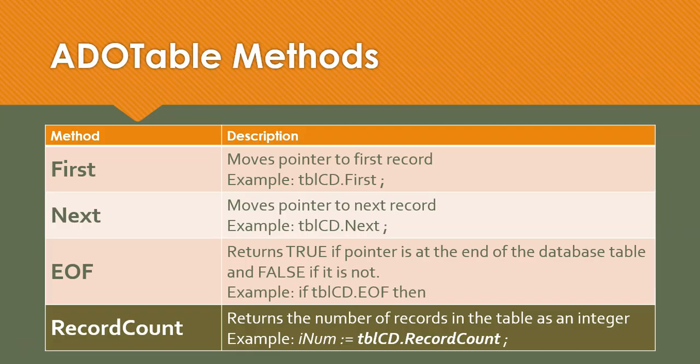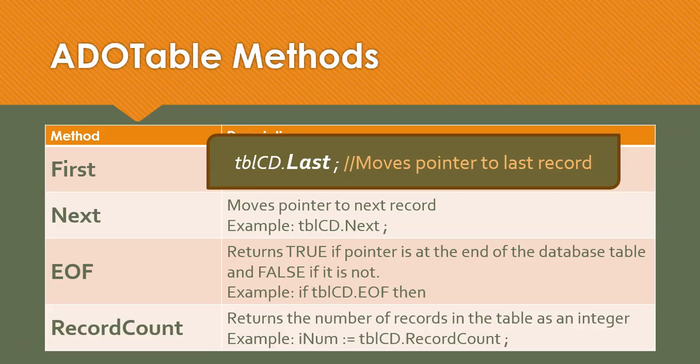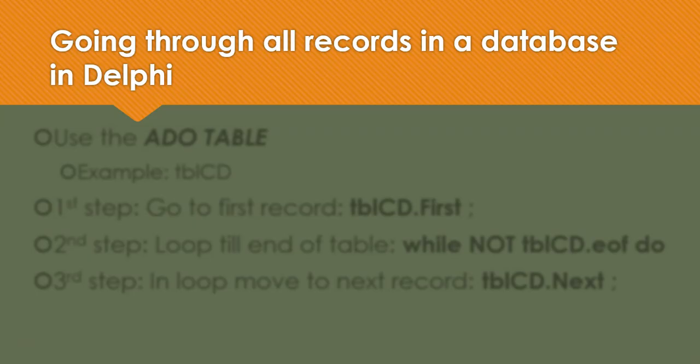Those are the main methods we'll be using, but there are others that are very similar. For example, there is dot last, which moves the pointer to the very last record, and there's also dot prior, which is the opposite of Next — it moves the pointer to the previous record. So Next moves it forward one, prior moves it back one. Those are other options available to you if you need them.